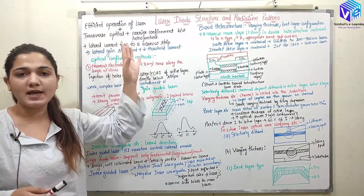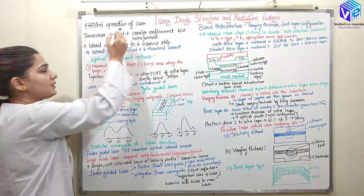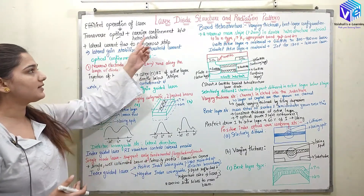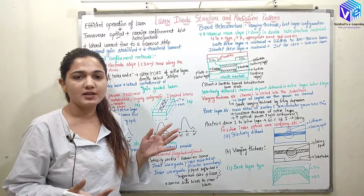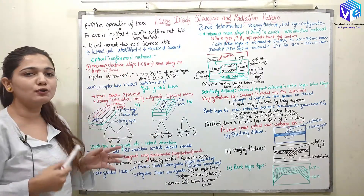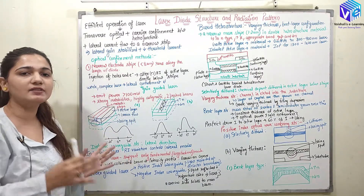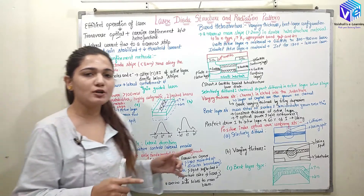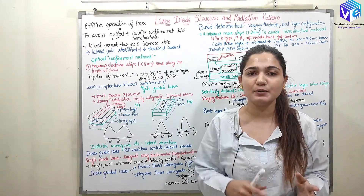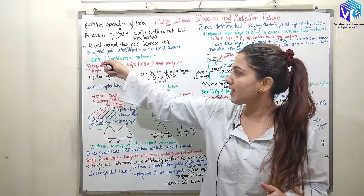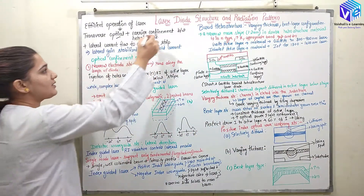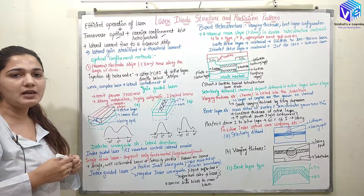Efficient operation of the laser would happen if we have transverse optical confinement. The optical power is confined in the transverse direction, or I can say the carrier confinement is in between the two heterojunctions. In these two manners I can have optical confinement. Then we can have the lateral current flow to a narrow strip only, and with the help of this I can have current confinement.